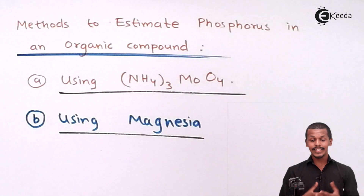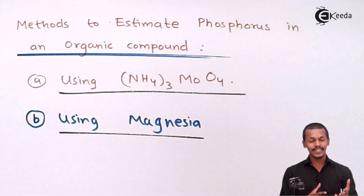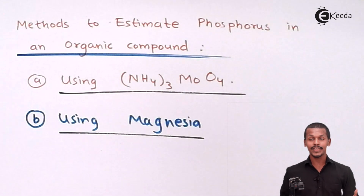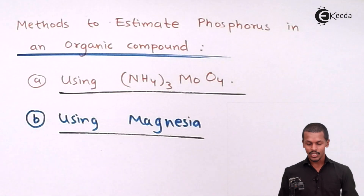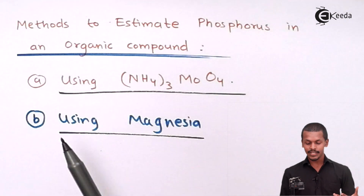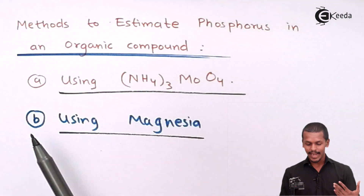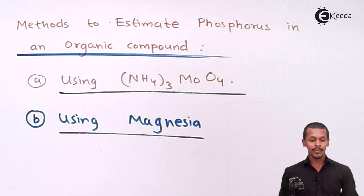There are two methods to estimate the phosphorus present in an organic compound. The first method is by using ammonium molybdate, and the second is by using magnesia.